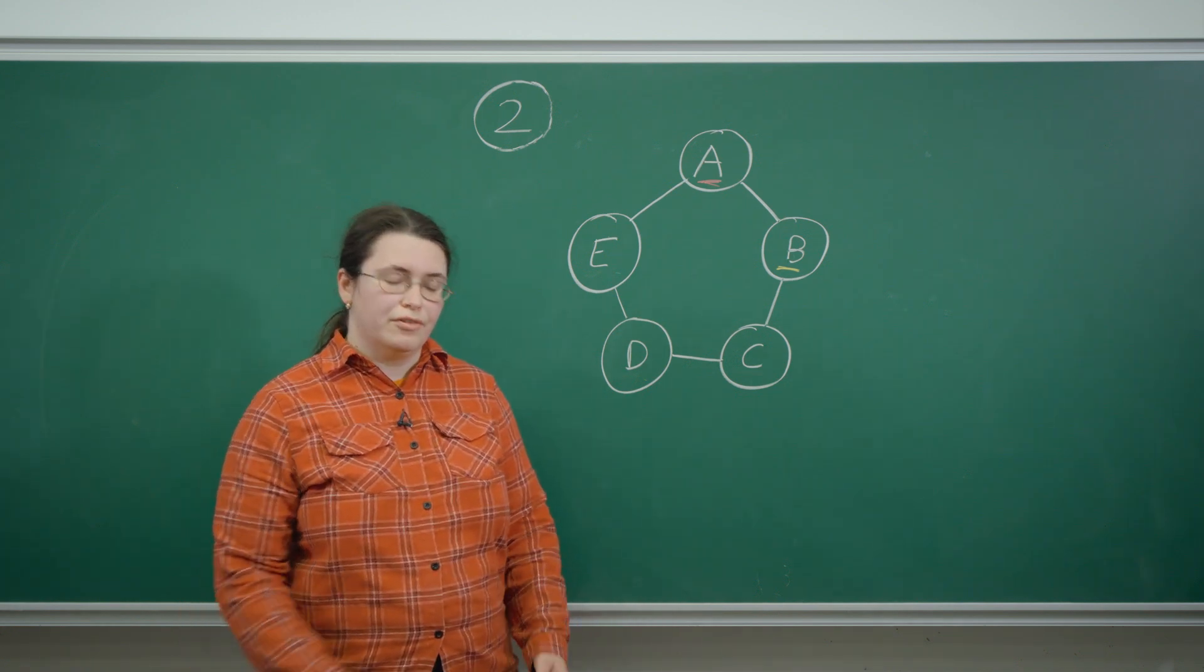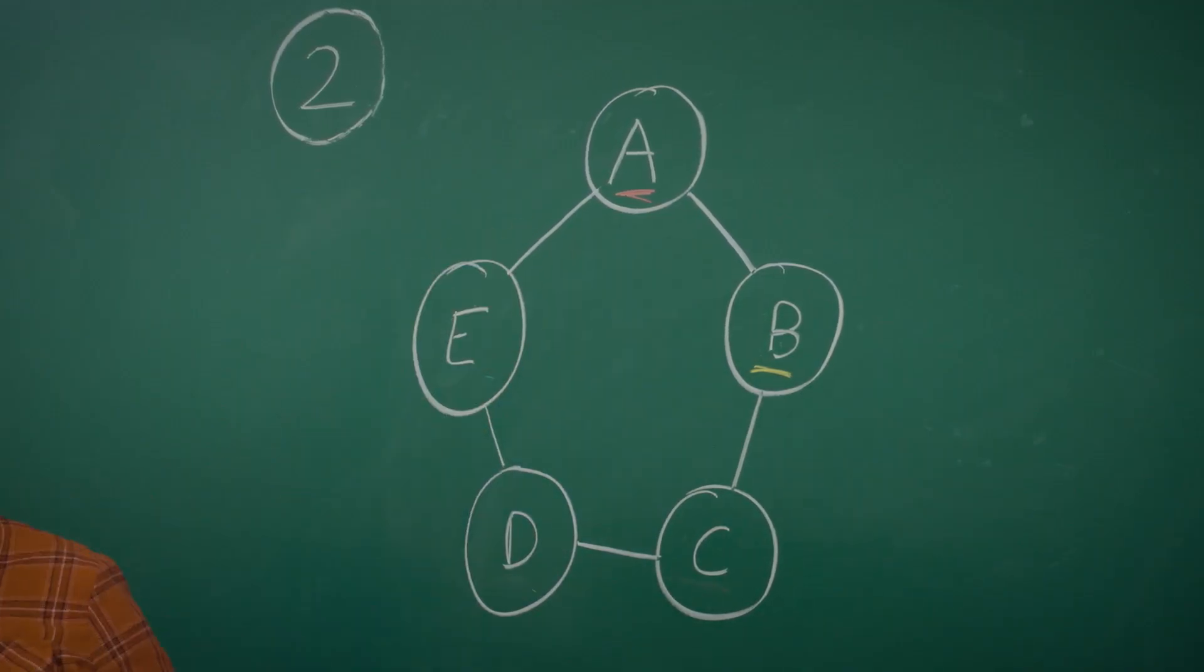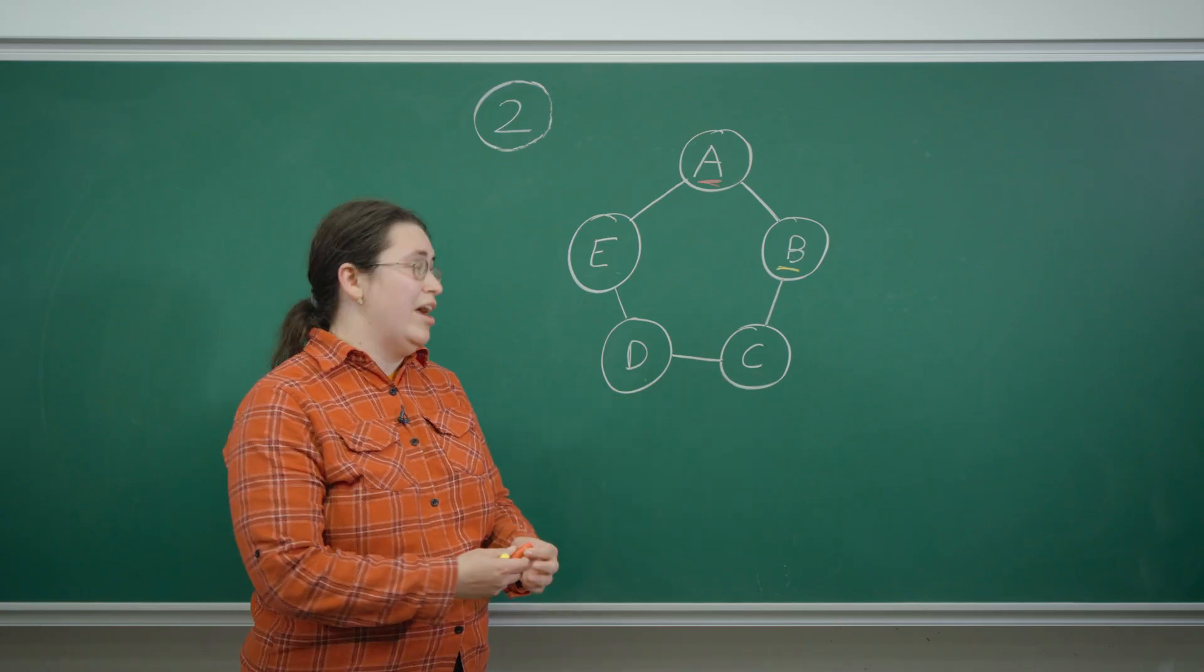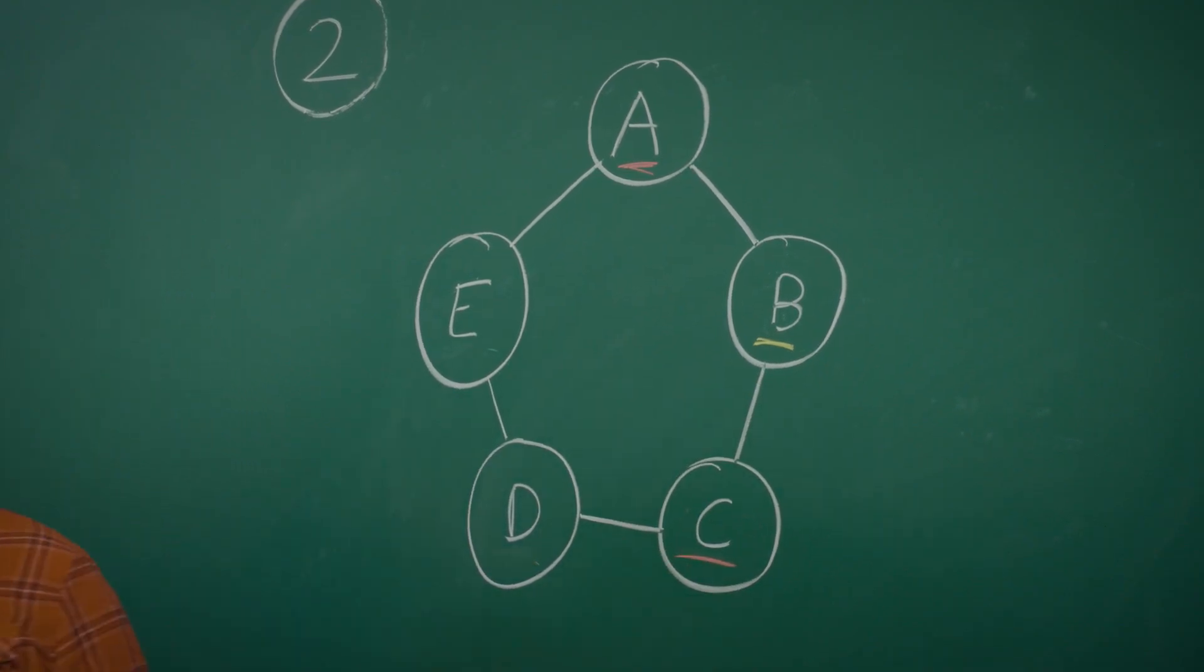But why not? If we're only using red and yellow and we fixed A to be red and B to be yellow, we know that C has to be red because it's adjacent to B and so cannot be yellow.